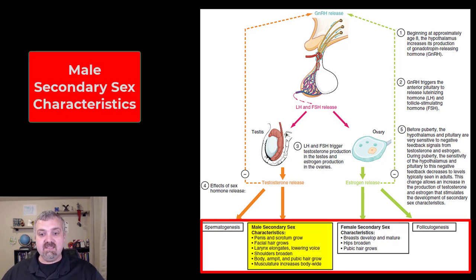The male secondary sexual characteristics are penis and scrotum growth, facial hair is going to grow in a male pattern, the larynx is going to elongate which makes the vocal cords longer and that's going to lower the voice, a broadening of the shoulders, body, armpit and pubic hair growth, and musculature increase. So increase in bone density, increase in muscle mass.